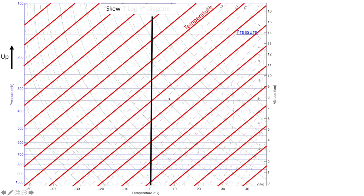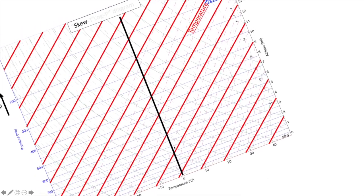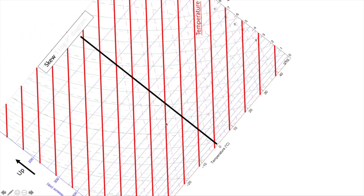For example, if we imagine that we measured temperature going up in the atmosphere and it looked like a vertical line on this diagram, our first intuition might be that temperature is constant with height. But this is not the case. Instead, we can see that we are continuously crossing lines of constant temperature and thus temperature is decreasing with height. It may be easier to see this if we momentarily unskew the temperature axis, showing a negative slope in our hypothetical measured temperature.